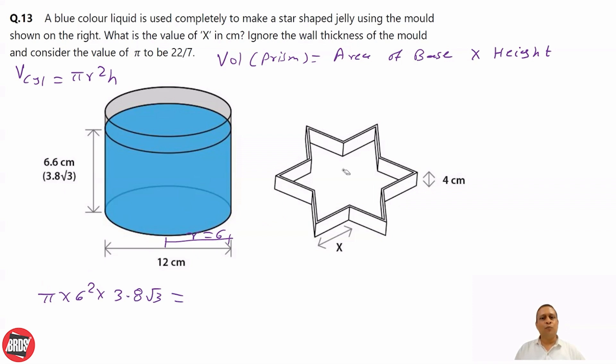Now what is volume of the star? Area of base. What is area of base? Now, if you join this way, right? What you get inside is a regular hexagon. You can again divide it like this.